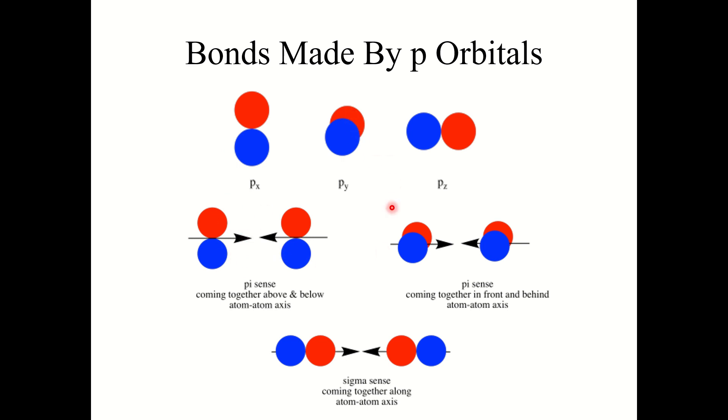Same thing here with these py orbitals. If we pushed two of these nuclei together with py orbitals, those would interact from our vantage point in front and behind of that internuclear axis. It's a parallel or side-to-side overlap. So this would also form a pi bond.